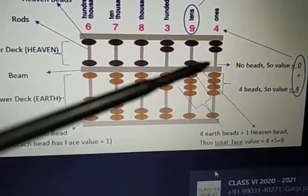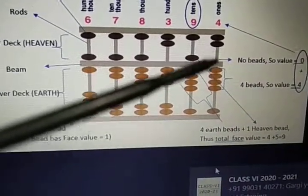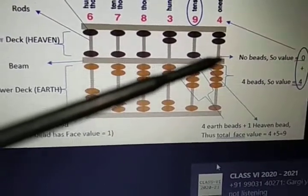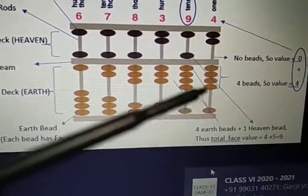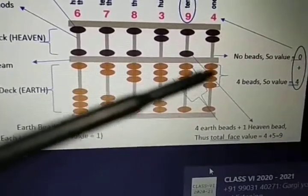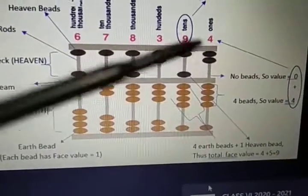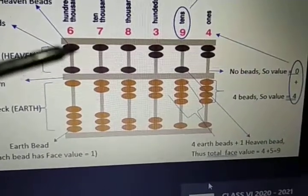Similarly we put the values in all the beads. If no bead is present then the value is zero. But you can see earth beads are four: one, two, three, four. So zero plus four, it becomes combined value four. Similarly we count these things.